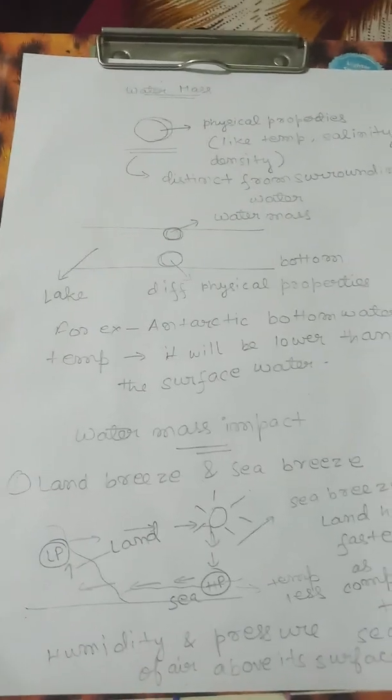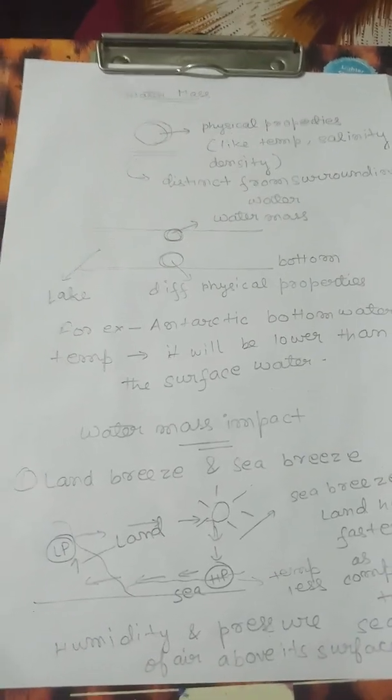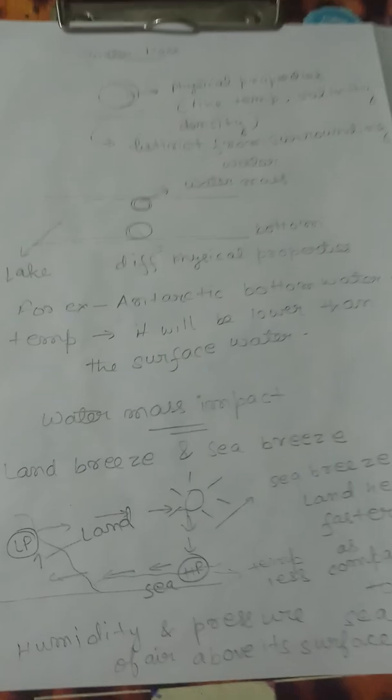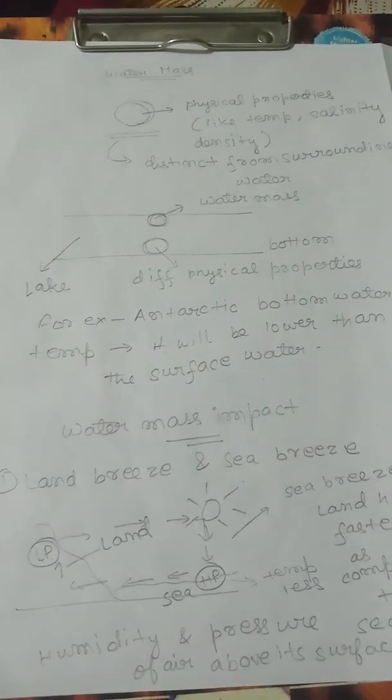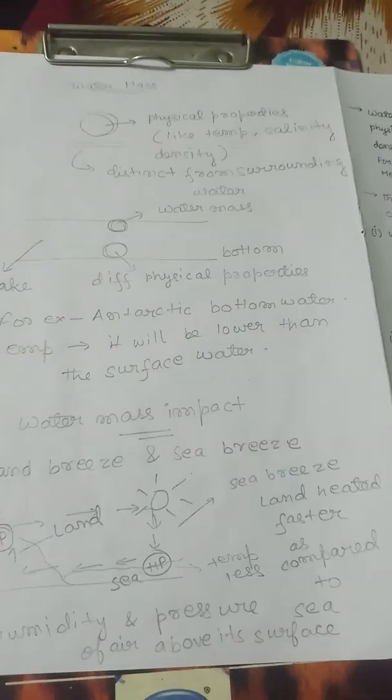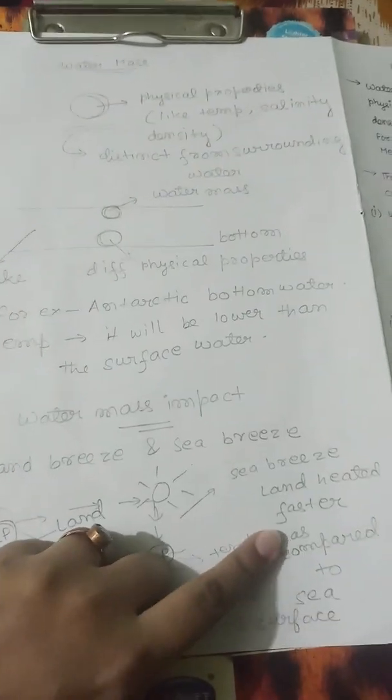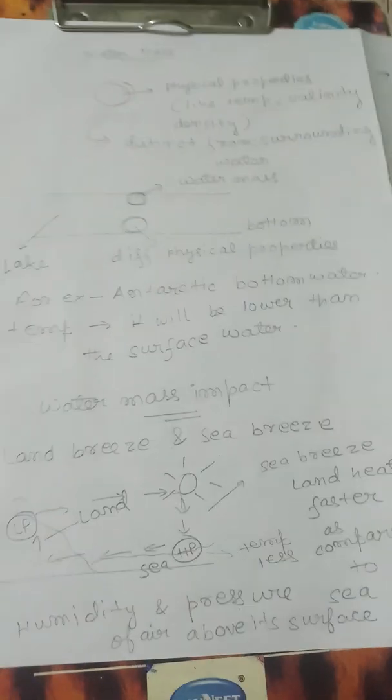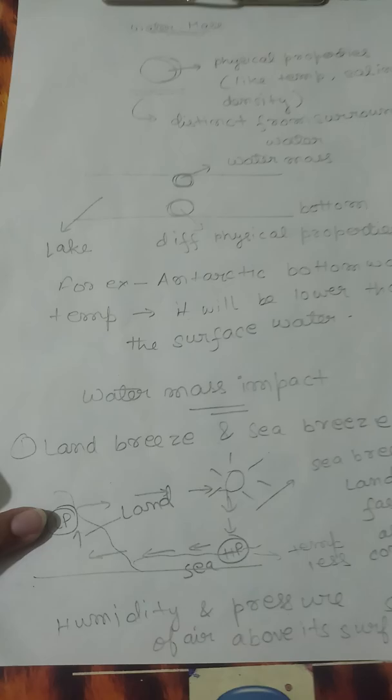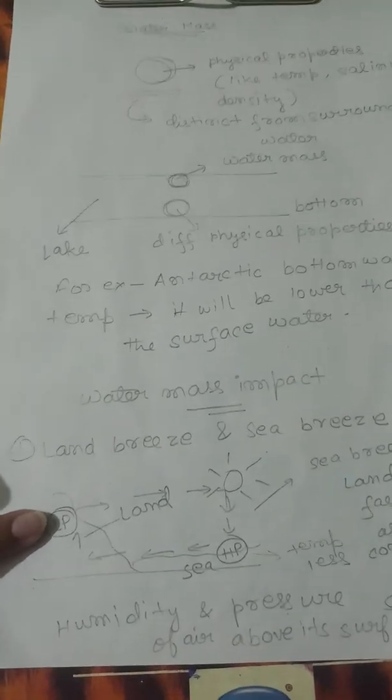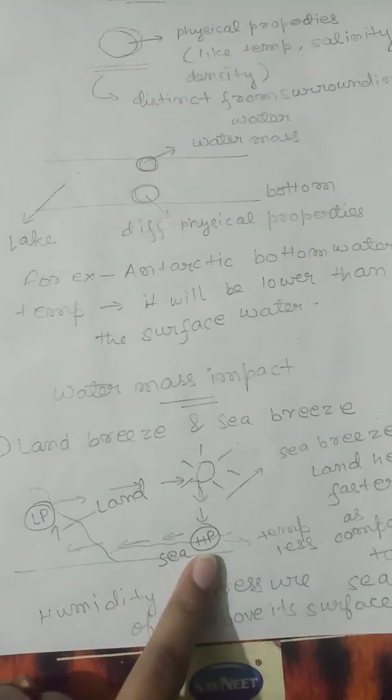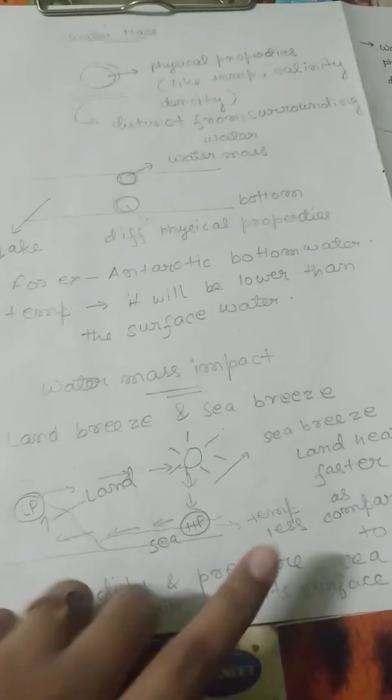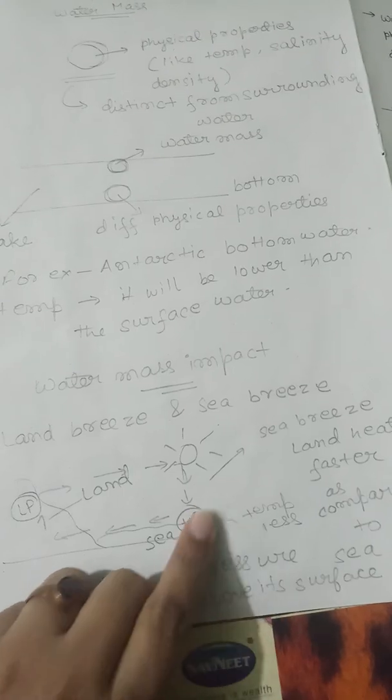As you know, sea breeze occurs during the daytime when the sun is overhead. The land gets heated faster as compared to sea, so it will have low pressure at the land. And over the sea, we have high pressure zone as the temperature is less.